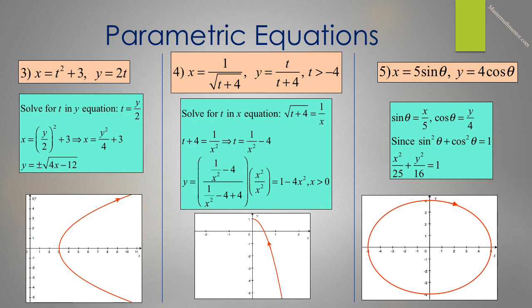Remember that removing the parameter is merely an aid to curve sketching. If the parametric equation represents the path of a moving object, the graph alone is not sufficient to describe the object's motion. It will tell you the path, but you still need the parametric equations to tell you the position, direction, and speed at a given time. We will be covering this in the next video.